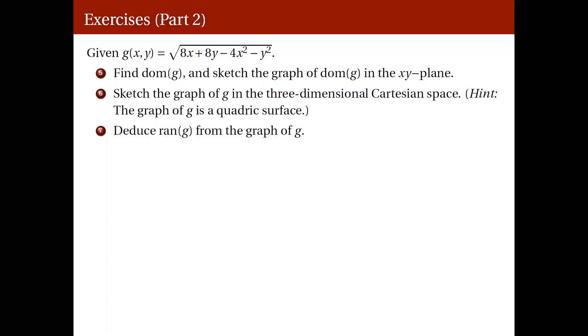Now we return to functions of two variables, in particular to this given function here, g(x,y) equal to square root of 8x plus 8y minus 4x squared minus y squared. And we will be doing the three items shown here.